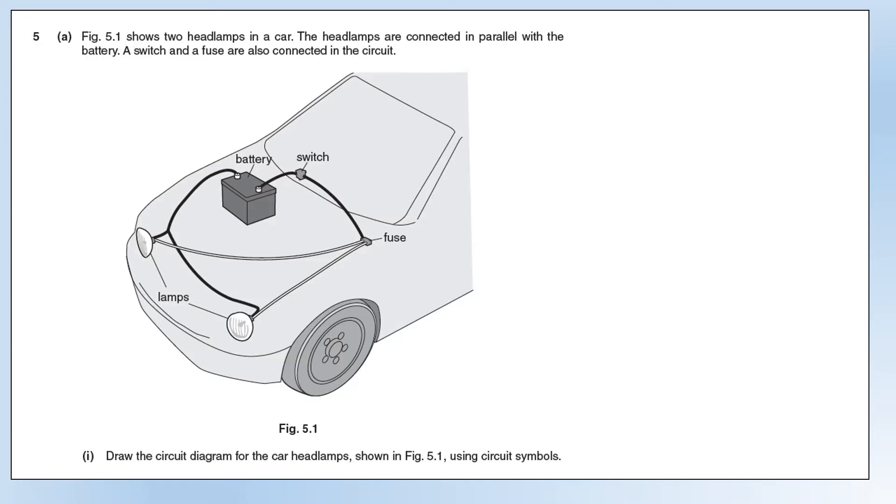So moving on to question 5, we've got two lamps connected in a car, and they're connected in parallel. We've also got a switch and a fuse. Draw a circuit diagram for this setup. The switch and the fuse are in series with the battery, and then it splits up for the two bulbs. We've got the battery or the cell shown there. We've got a fuse and a switch in series with it. It doesn't matter whether the switch is before or after the battery, it's the same circuit. And then we've got two light bulbs in parallel with each other.